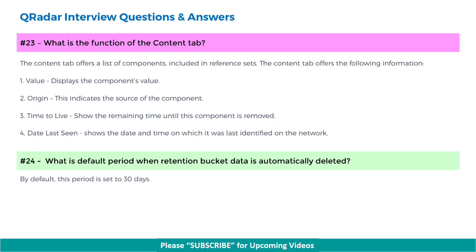Next, what is the function of the content tab? The content tab offers a list of components included in reference sets. The content tab offers the following information: the value, which displays the component's value; the origin, which indicates the source of the component; the time to live, which shows the remaining time until the component is removed; and the date last seen, which shows the date and time on which it was last identified on the network.